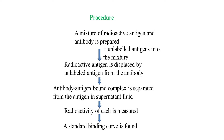In the procedure, the first step is preparing a mixture of radioactive antigen and antibody. In the second step, unlabeled antigen is added into the mixture. We add the sample containing the unlabeled antigen which we have to analyze, and naturally this unlabeled antigen will go and displace the radioactive antigen from the antibody.